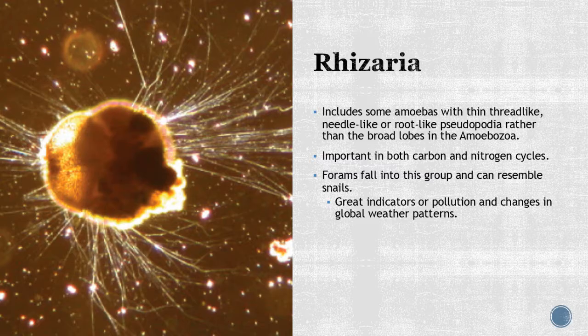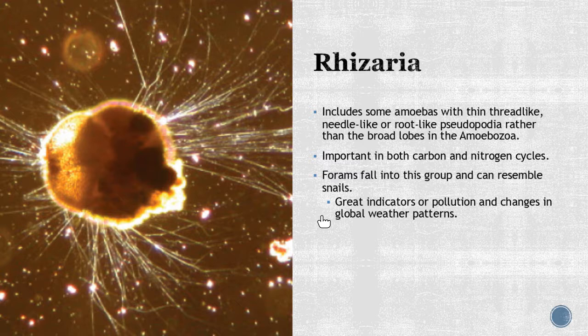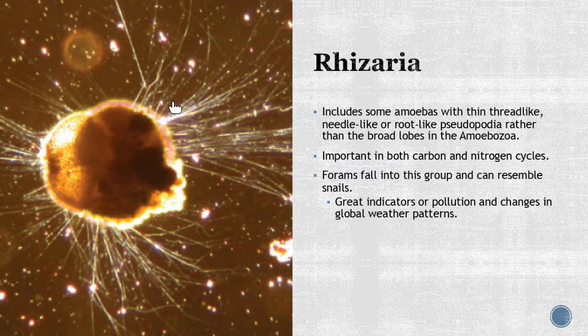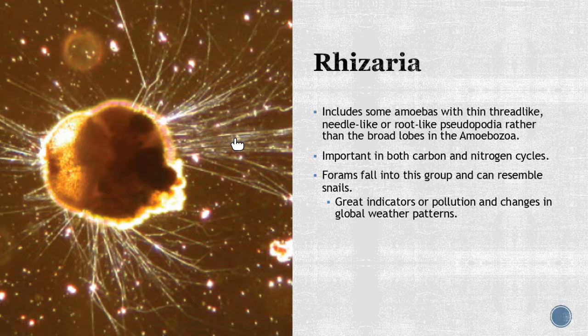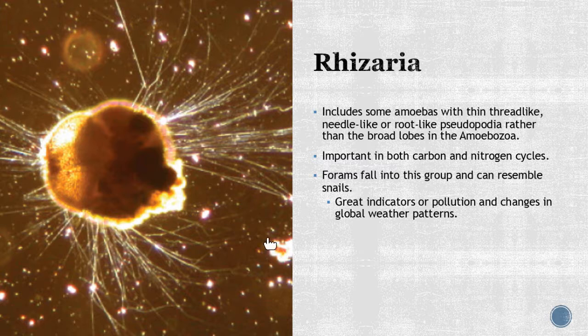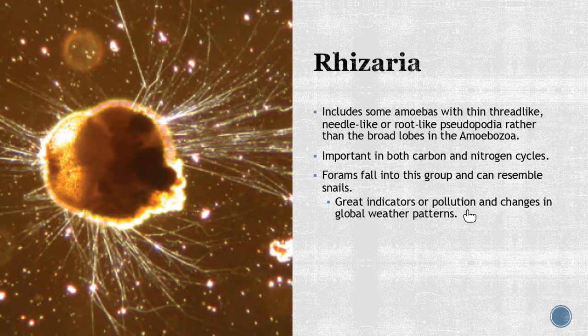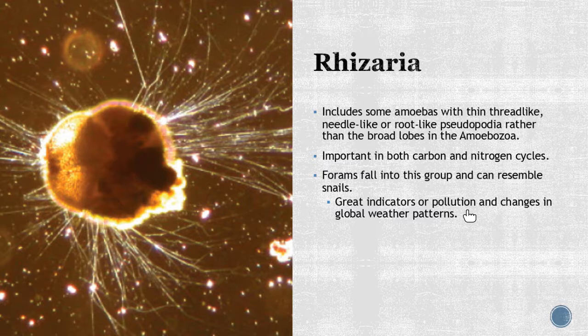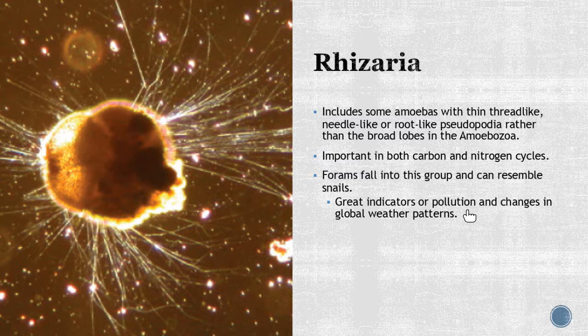The Rhizaria. We're going to have some amoebas fall in here but the key thing about them is they have all these thin threads. It kind of looks like all these thin thread-like things coming off them. They're leno-like, root-like, and they come off the organism. These are going to be key for both the nitrogen and carbon cycles and forams are also going to be in this group. They look like little bitty snails. One thing that scientists do is they follow these guys and they are great indicators for pollution. There's different organisms, animals, and plants that we use as indicators to watch when things are going bad. Mosses are key for plants because they are great indicators of pollution. Amphibians for animals—if you start to see the amphibians die out that means the water source is probably polluted. These guys are also another great indicator.